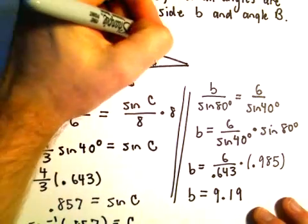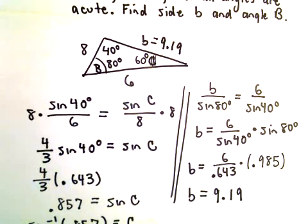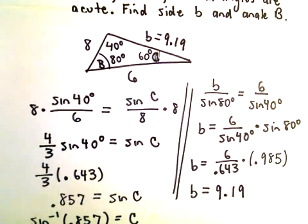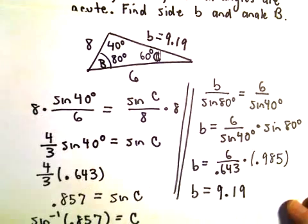So now we know all the angles and we know all the lengths. Again, all you're really doing is just repeatedly using the law of sines to figure out the values that you're missing in this case.